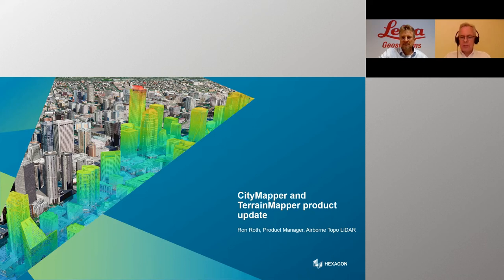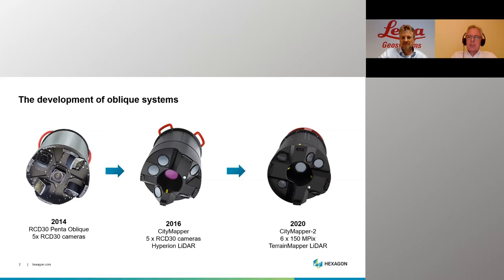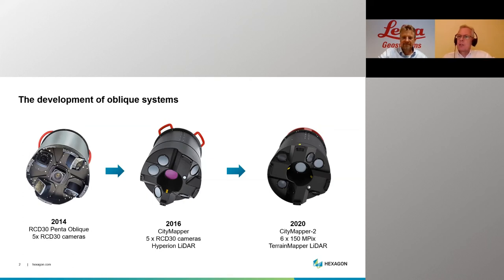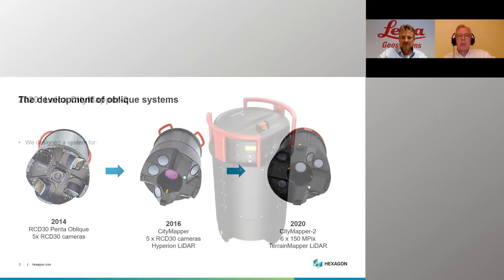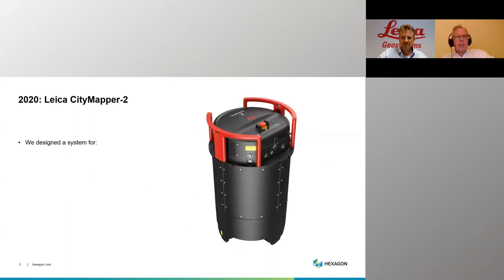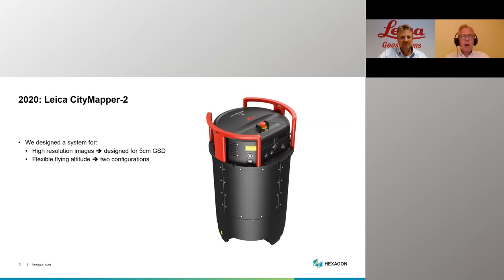We've been developing these oblique camera systems like our CityMapper for a number of years now. The latest version is the CityMapper 2, which takes advantage of our new MFC 150 camera heads — 650 megapixel camera heads in this same device — as well as a full function LiDAR derived from our Terrain Mapper product.